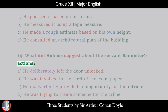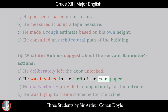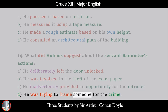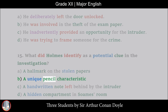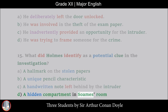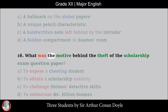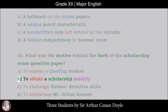14. What did Holmes suggest about the servant Bannister's actions? A. He deliberately left the door unlocked, B. He was involved in the theft of the exam paper, C. He inadvertently provided an opportunity for the intruder, D. He was trying to frame someone for the crime. 15. What did Holmes identify as a potential clue in the investigation? A. A hallmark on the stolen papers, B. A unique pencil characteristic, C. A handwritten note left behind by the intruder, D. A hidden compartment in Soames' room. 16. What was the motive behind the theft of the scholarship exam question paper? A. To expose a cheating student, B. To obtain a scholarship unfairly, C. To challenge Holmes' detective skills, D. To embarrass Mr. Hilton Soames.